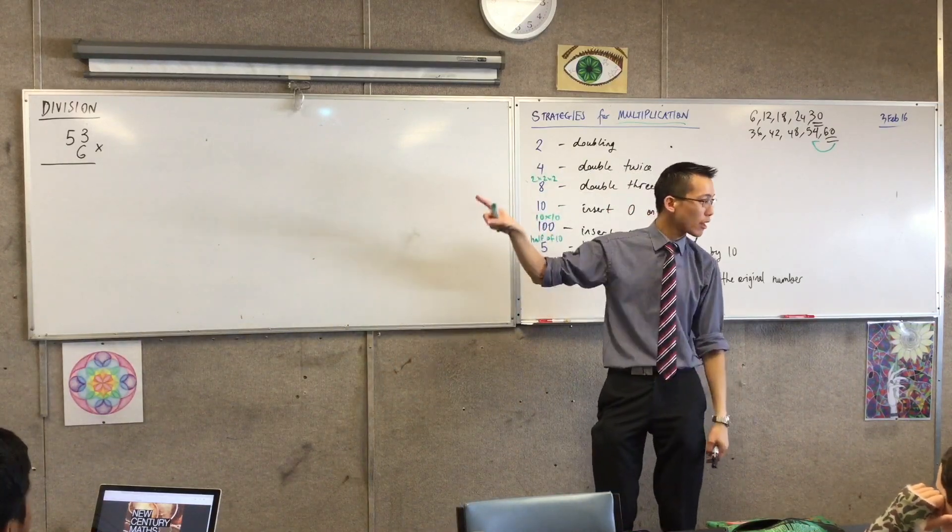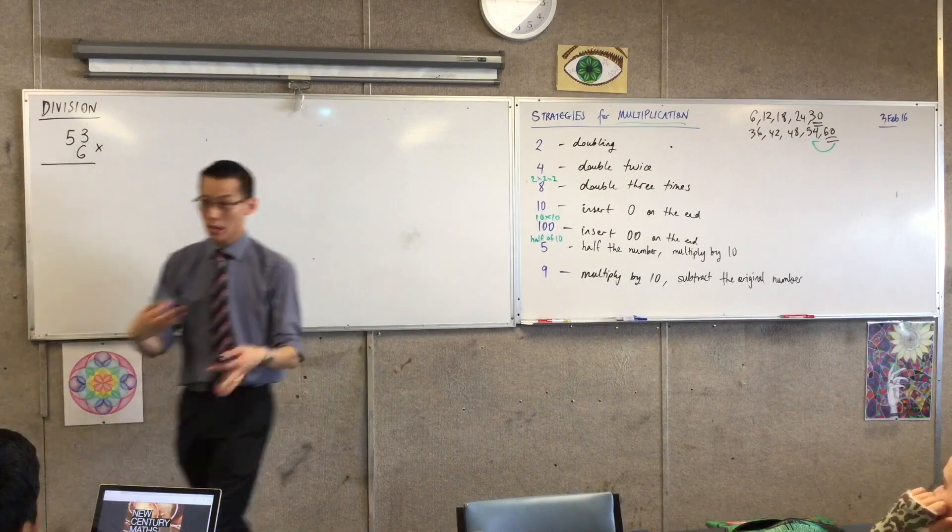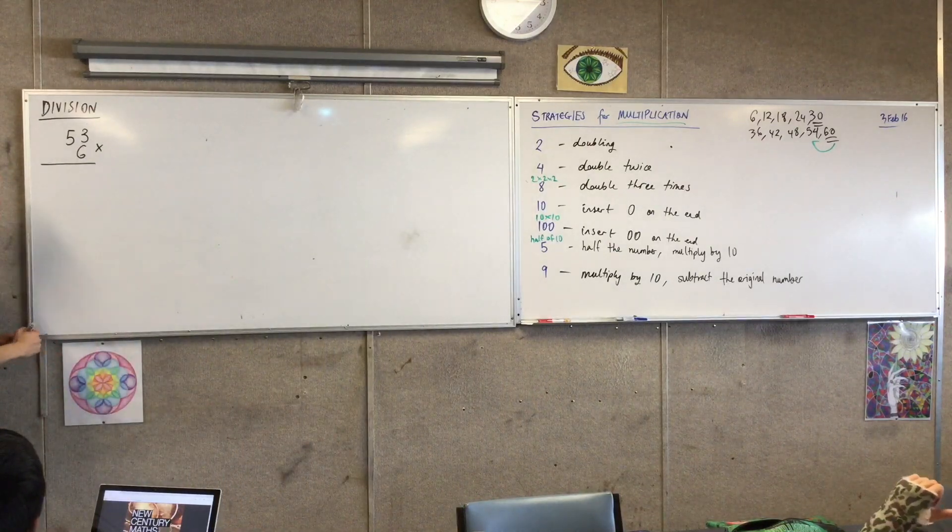So let's just do this product. Can we work out what this is? Can you talk me through how you might do it? Yeah, brother. Well, first of all, I times 6 by 3.